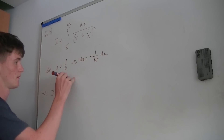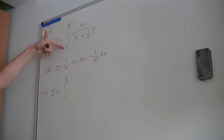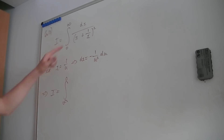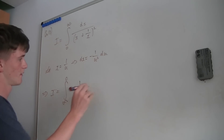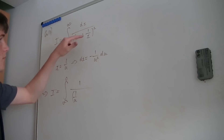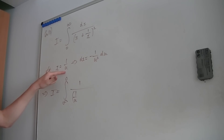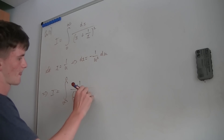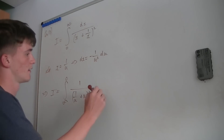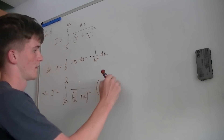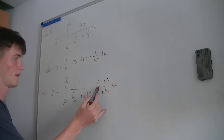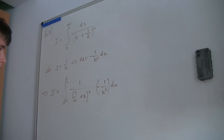So this implies that I equals: as x approaches infinity, u approaches 0, and as x approaches 0, u approaches infinity. In the denominator we have x, which is 1 over u, and 1 over x is just u. And dx is minus 1 over u squared du.